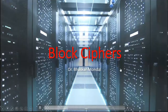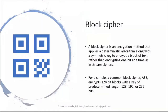A block cipher is an encryption method that applies a deterministic algorithm along with a symmetric key to encrypt a block of text, rather than encrypting one bit at a time as in stream cipher. In stream cipher, the encryption method encrypts one bit or one byte at a time, but in block cipher it does not work that way.